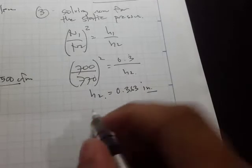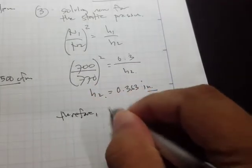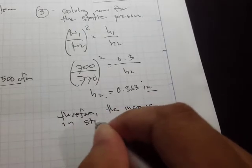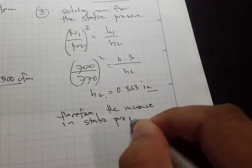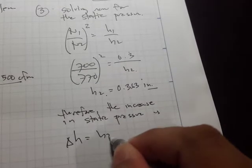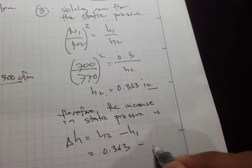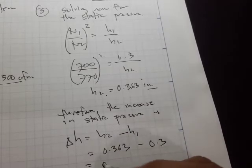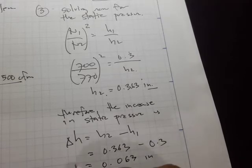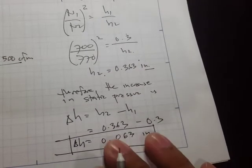Calculating: h₂ = 0.3 divided by (700/770)² = 0.363 inches. We are asked to find the increase in static pressure, which is the difference between final and initial. Therefore Δh = h₂ − h₁ = 0.363 − 0.3 = 0.063 inches.